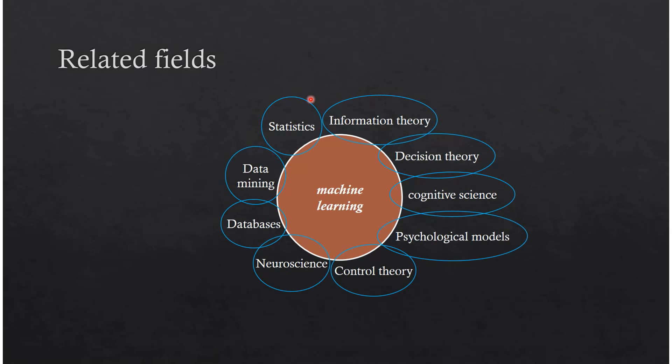There are so many related fields to machine learning. Almost every topic that used to not be related to computer science is nowadays somehow related to computer science due to machine learning. For example, we have psychological models, control theory, neuroscience, cognitive science, and so many other related topics. The field keeps getting bigger and bigger the more we discover machine learning.